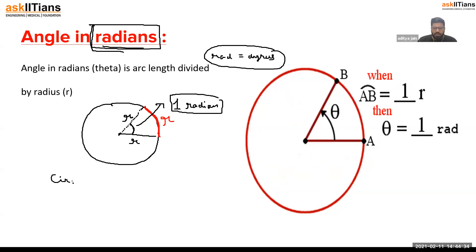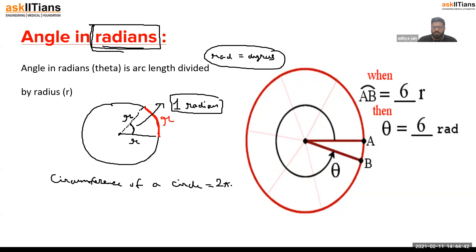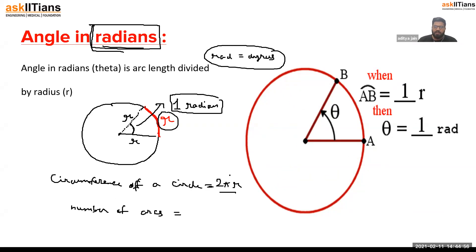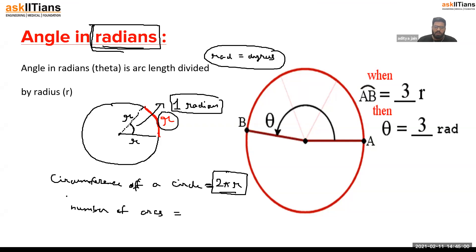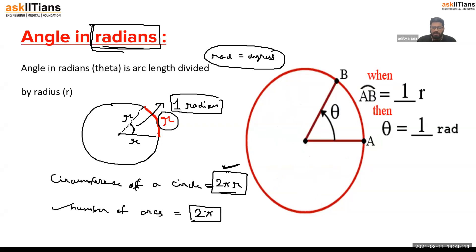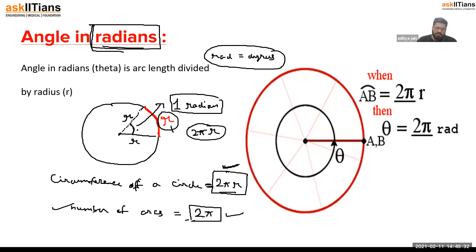Now, for a complete rotation — you know the circumference of a circle is 2πr. So how many arcs of length r are required to make a complete circumference of 2πr? The answer is 2π. So if we take 2π arcs each of length r, the total length is 2πr, which is the circumference. Since each arc subtends one radian at the center, the angle made by 2π arcs will be 2π radians.